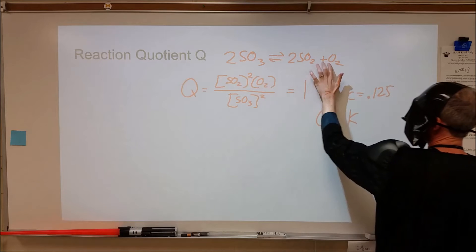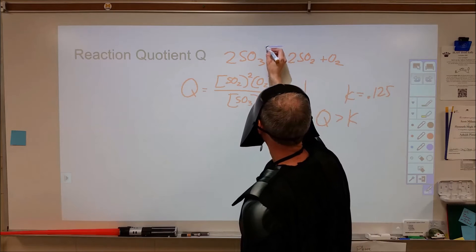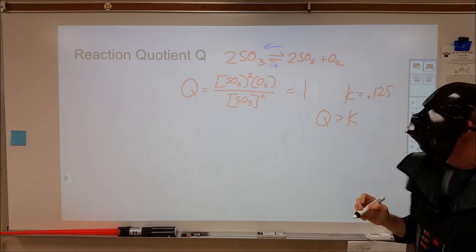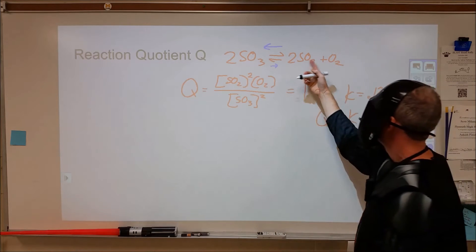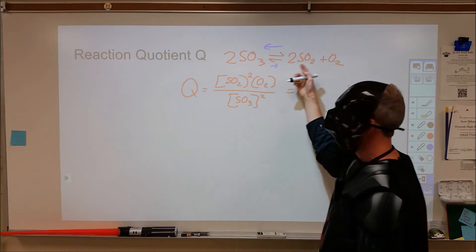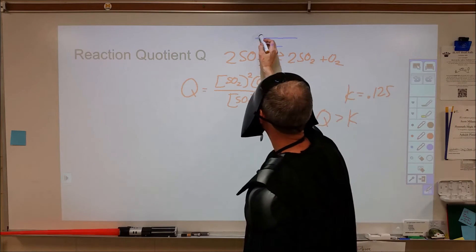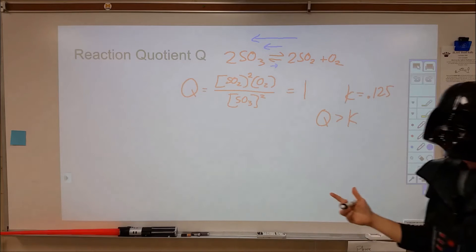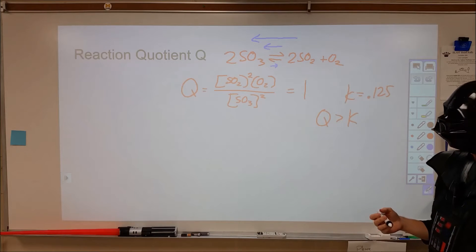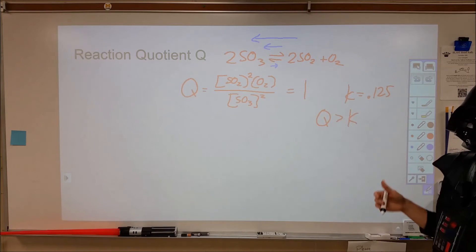If we have too much of these, what that indicates is that our reverse direction is currently faster than our forward direction. What's going to happen over time is these are going to react to form this faster than this will react to form those. Over time, I'm going to shift to the left, meaning that I'm going to form more sulfur trioxide and less SO2 and oxygen gas over time until Q becomes the equilibrium constant of 0.125.